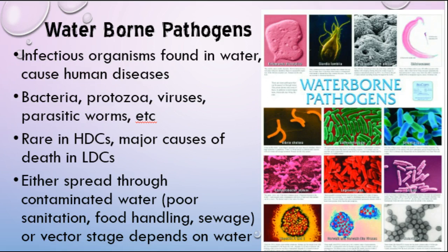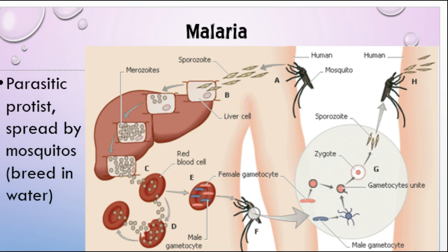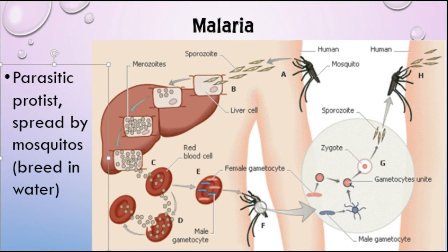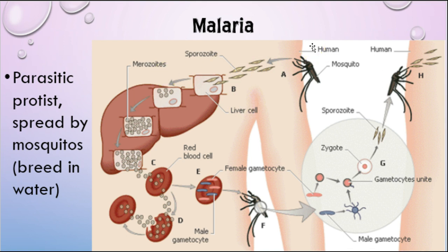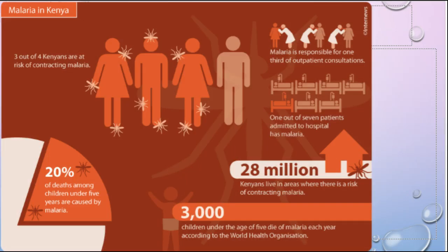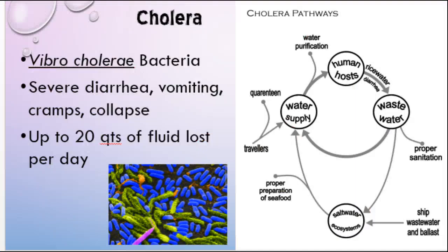In some cases it's actually a vector stage that depends on water. Probably the most common of those is malaria, which is an infectious disease caused by a protist. This protist likes to live inside both humans and mosquitoes — the mosquito is the vector that spreads it from human to human, but it's the protist that actually makes you sick. There are lots of similar diseases spread this way. Lyme disease spreads similarly but ticks breed on land. Yellow fever, dengue, and West Nile virus are all similar types of diseases, and these are major problems worldwide.